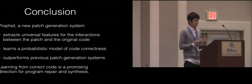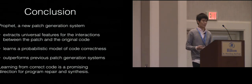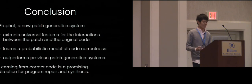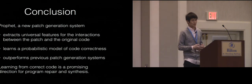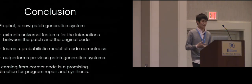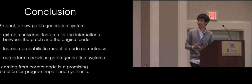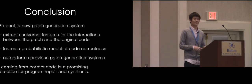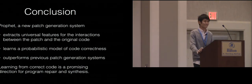To conclude, we present Profit, a new patch generation system that extracts universal features for the interactions between the patch and the original code, learns a probabilistic model of code correctness, and in our experiments outperforms all previous patch generation systems. We believe that learning from correct code is a very promising direction for solving many programming language challenges, such as program repair and synthesis, and Profit is just a first step in that direction. Thank you very much.